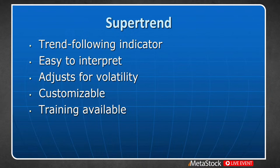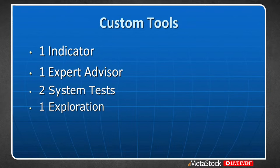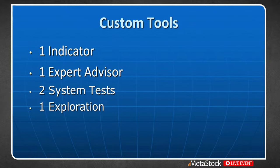One thing we're going to do today that's different from any other MetaStock webinar I've done is I'm going to give everybody who wants it the formulas I've created for this particular class. I created an indicator for the super trend indicator, an expert advisor, two system tests, and an exploration. I'm going to walk you through how to use those today. If you're interested in receiving a copy of these formulas, just send me an email at the end of the presentation. Tell me you were in the webinar and I'll be happy to get you those formulas.